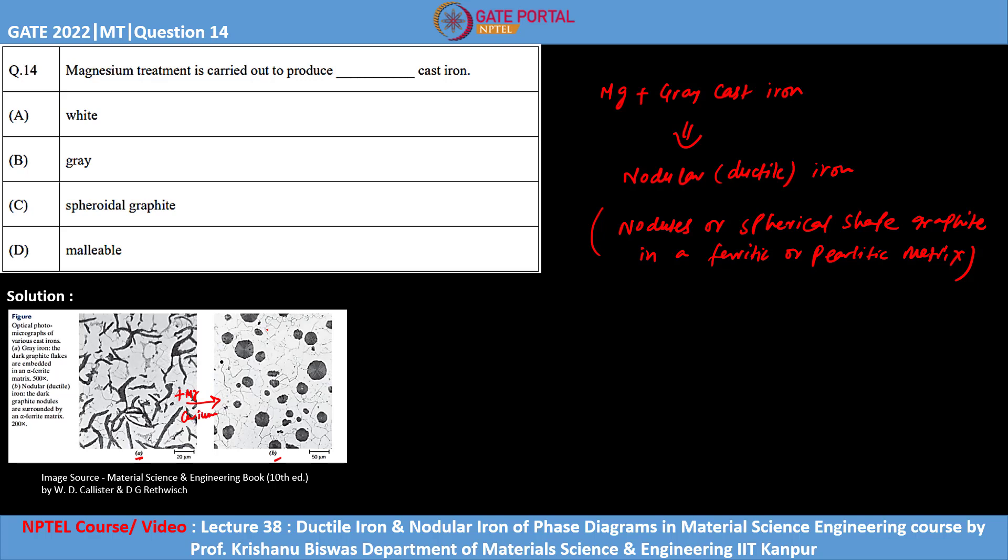If you see the microstructure of gray cast iron, it is having needles of graphite. These needles have very sharp edges here and here. These sharp edges are not good considering the mechanical properties of this type of material.